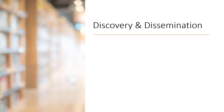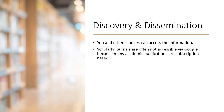The discovery and dissemination phase of the scholarly communication cycle is where the information is accessed by you and other scholars. Scholarly journals and articles are often not accessible via search tools such as Google, since they are subscription-based. Many academic publications are part of the Deep Web, which means they are unavailable using search engines like Google, but are available via UNB Libraries.